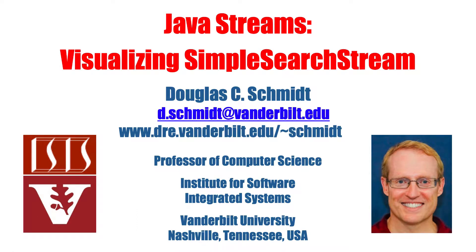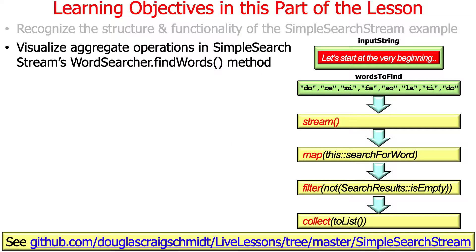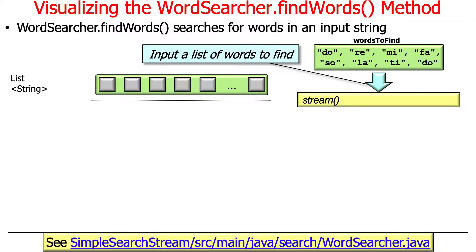What we're going to do now is illustrate and talk about how to visualize the use of a stream for the simple search stream program that we just took a look at. In my experience, we could just look at code — and of course we'll look at code because that's the whole purpose of the course — but sometimes it helps to literally see the big picture of how the various elements are all stitched together. So we're going to visualize how this thing works, and hopefully when you look at the code it'll be a little bit more clear.